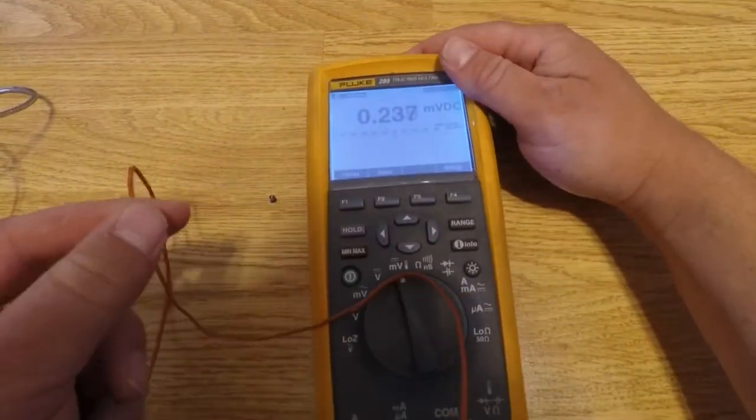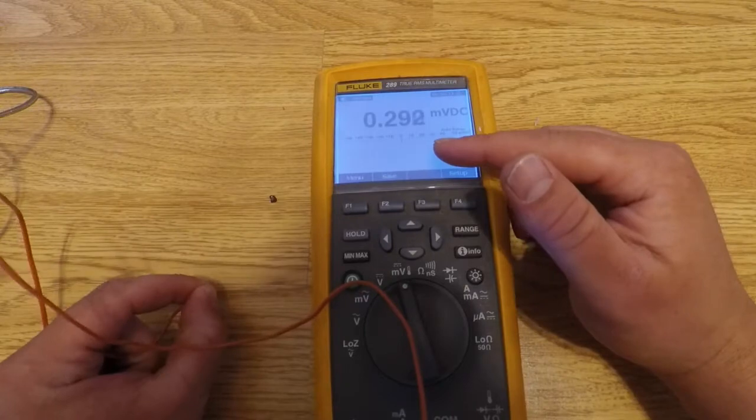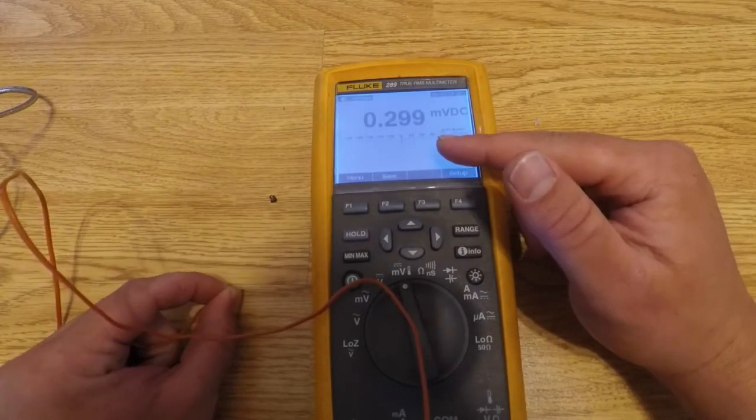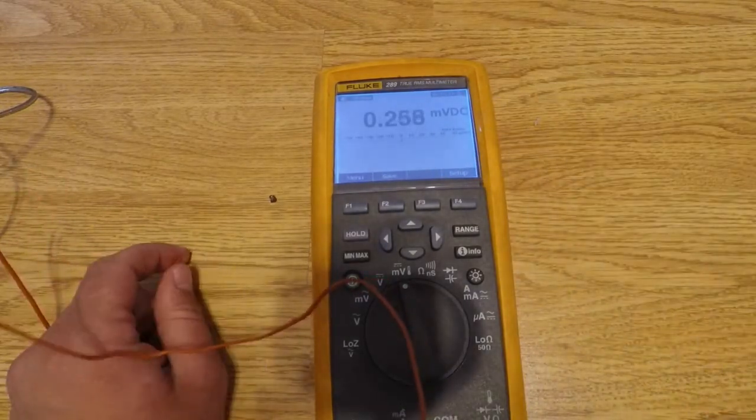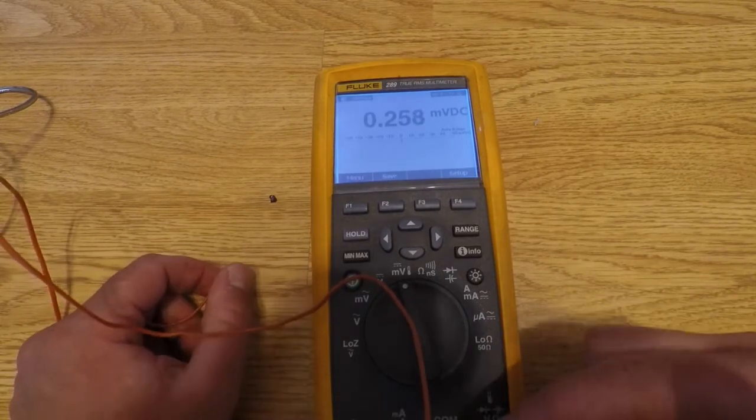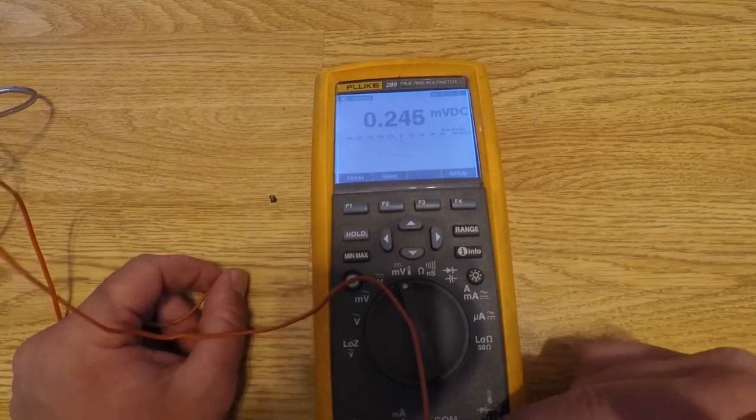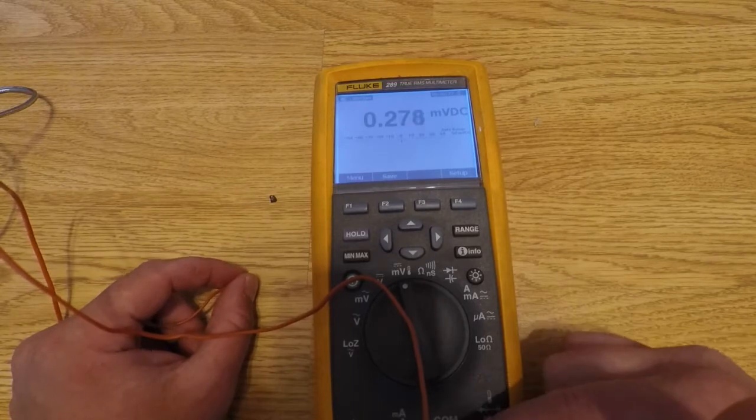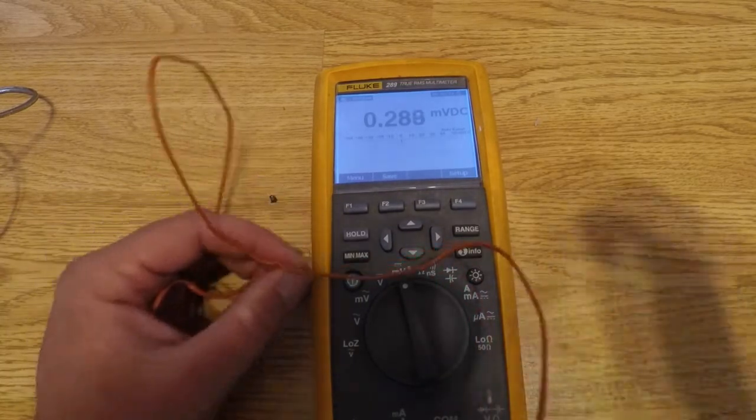When I see 0.3 millivolts, that doesn't necessarily tell me anything because I would need to know the actual temperature inside the multimeter at those two points on the wire. It's always reading a difference.